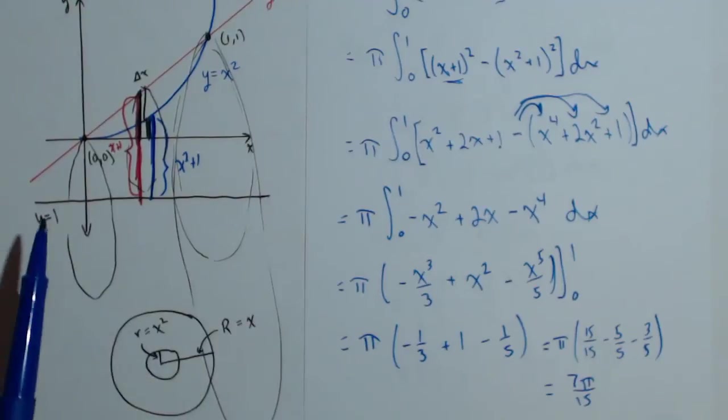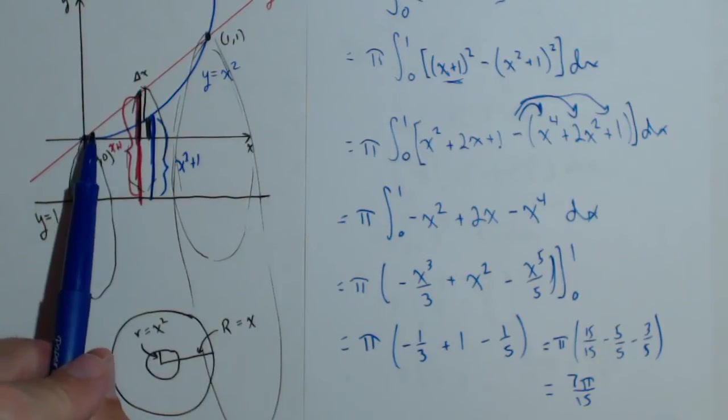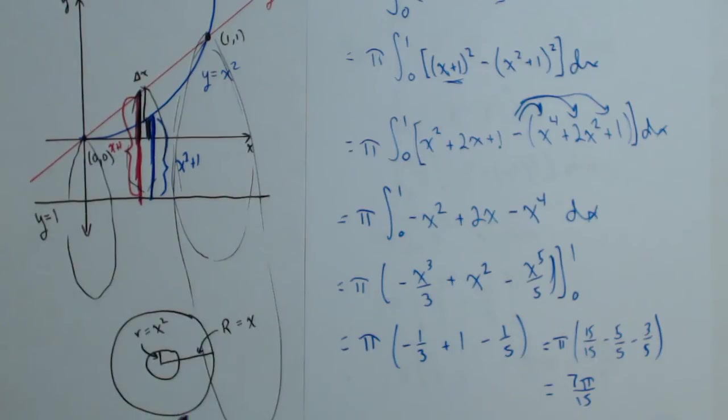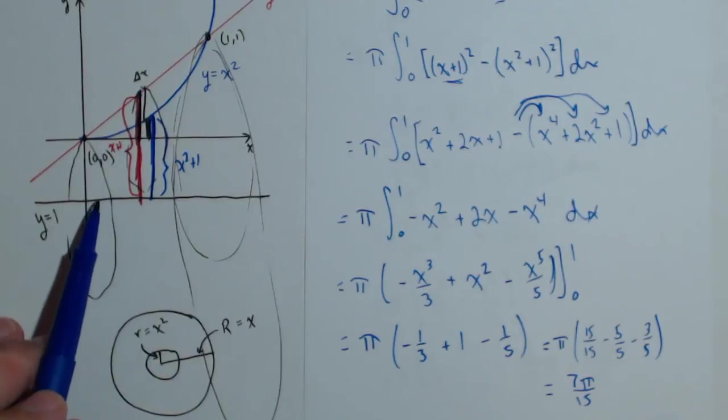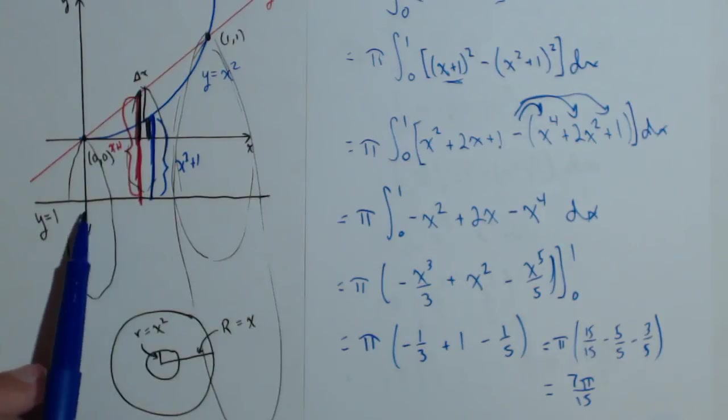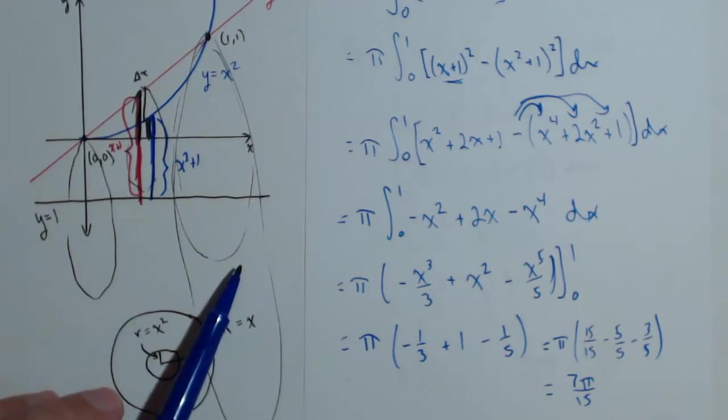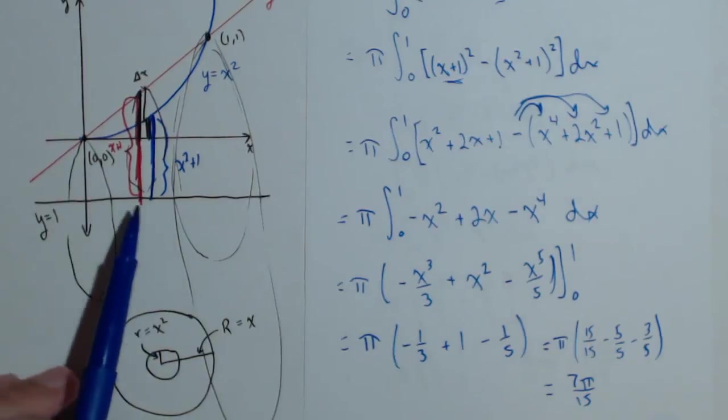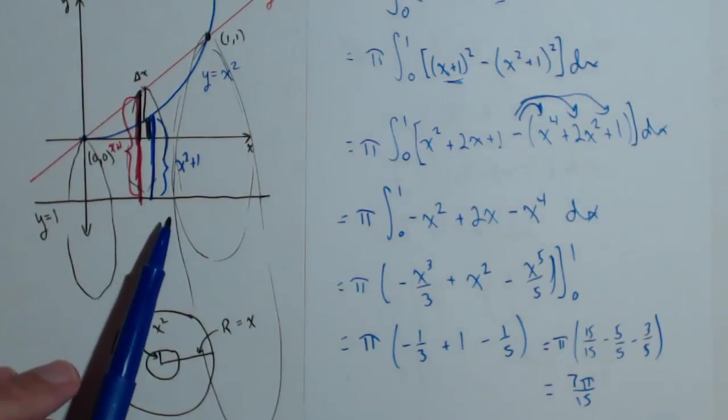So again, that's how you can revolve a region between two curves around the x axis. You'll sometimes hear this called the washer method because our slice looks like a washer. We can also revolve it around a line that's parallel to the x axis very easily by just adjusting our radii.